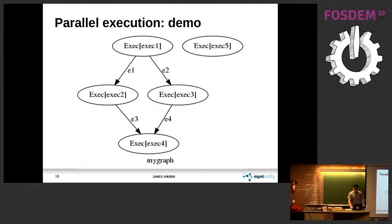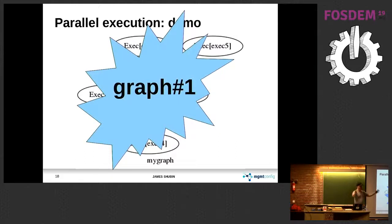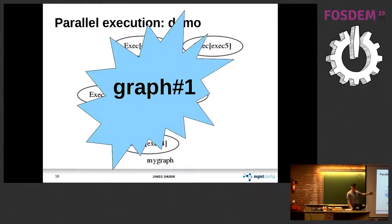I have a demo of this, but it's not so exciting. This is graph number one — the dependency graph in our engine. Three graphs, right? Like the infographic?